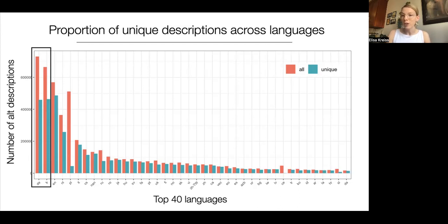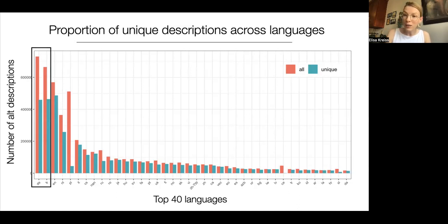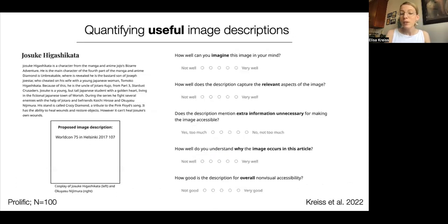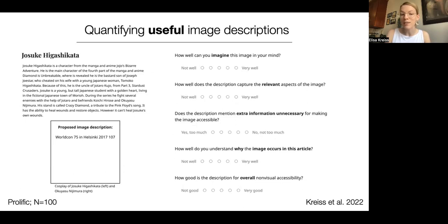Noteworthy outliers are German and French with only about 65% unique descriptions. In German, the high duplication rate is due to extensive use of image galleries in articles, where the alt description is defined by the template engine to be the same as the caption. To investigate whether there are other potentially general estimates of the proportion of useful descriptions, we conducted a human subject experiment where we showed participants sample descriptions from English Wikipedia. They rated those using established criteria from prior research and were presented within the available Wikipedia context to imitate the user experience as closely as possible.